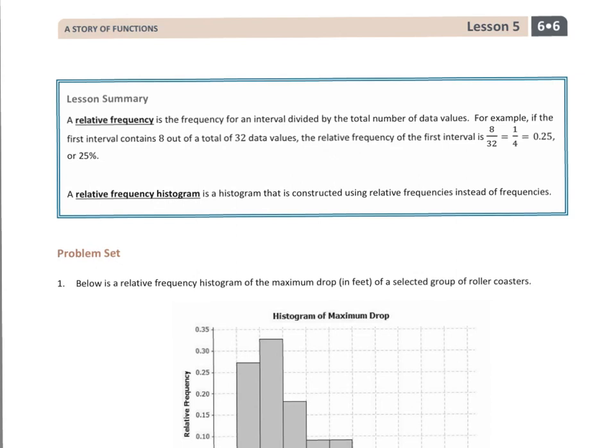For the first problem, we see it says below is a relative frequency histogram of the maximum drop in feet of a selected group of roller coasters. The first thing is we have to see what relative frequency is, and we see we have the definition here. It's a frequency for an interval divided by the total number of data values.